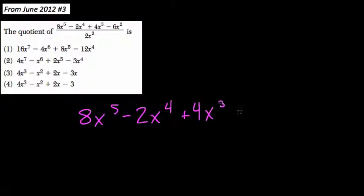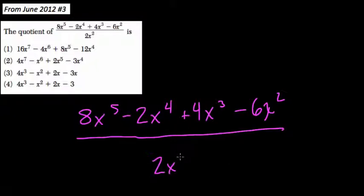Okay, so here you want to find the quotient, or we want to divide out the following expression. It's 8x to the 5th minus 2x to the 4th plus 4x to the 3rd minus 6x squared, all of that over 2x to the 2nd. Now this might look overwhelming because of all the terms,